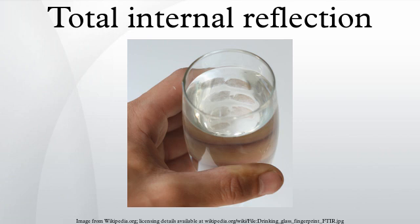The critical angle is the angle of incidence above which total internal reflectance occurs. This is particularly common as an optical phenomenon, where light waves are involved, but it occurs with many types of waves, such as electromagnetic waves in general or sound waves.